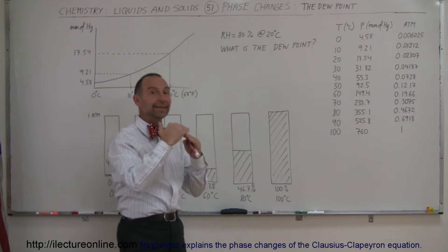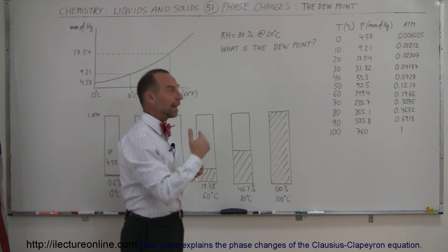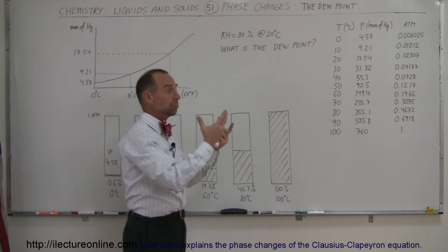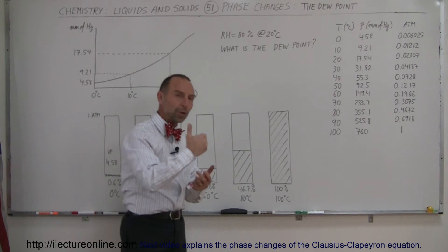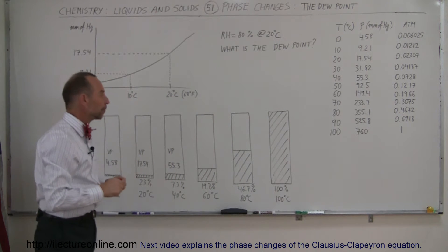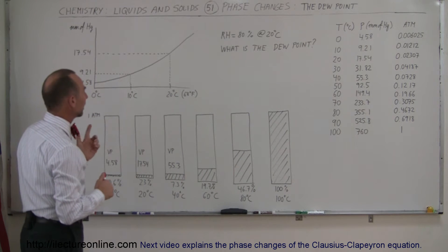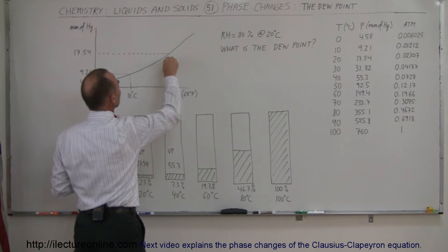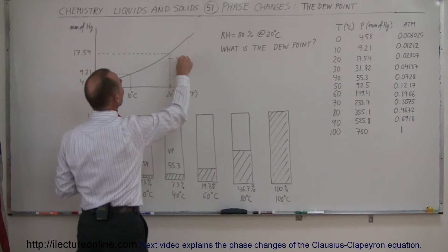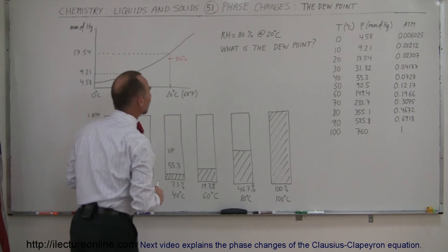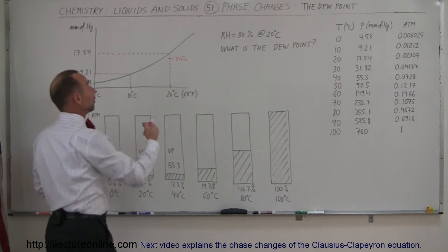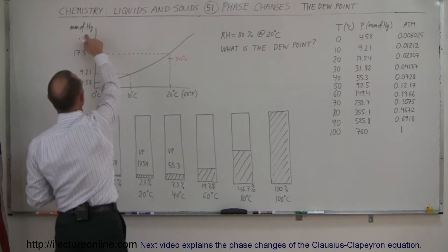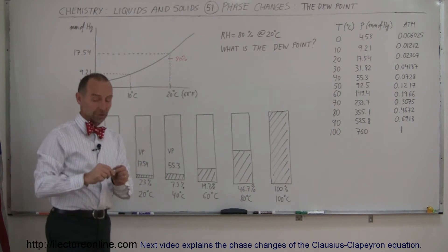...the relative humidity then tends to increase and eventually reaches 100%. And then if the temperature decreases even more, the water vapor in the atmosphere will begin to precipitate out, will begin to condense out. So an example: let's say that we started out at 80% humidity. Let's find out what the partial pressure is when the relative humidity is 80%. The vapor pressure at 20 degrees centigrade is 17.54 millimeters of mercury, so 80% of that is how much?